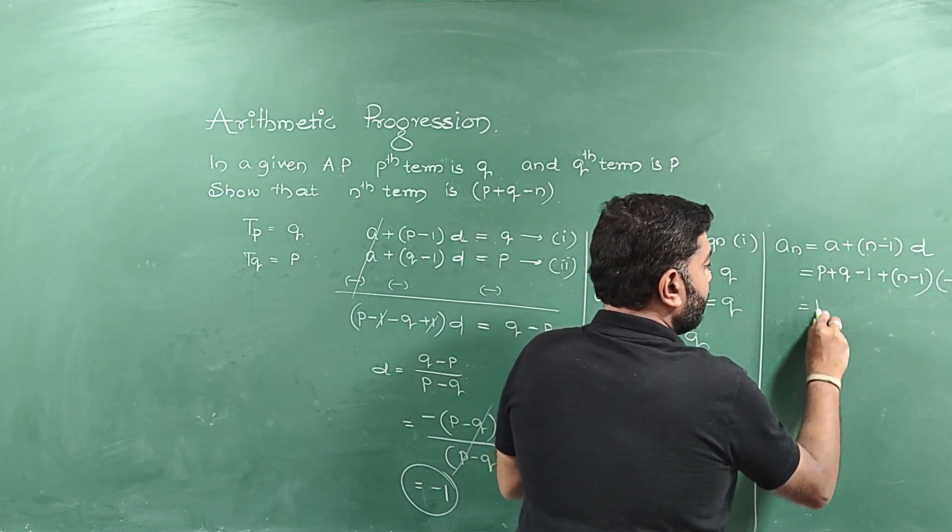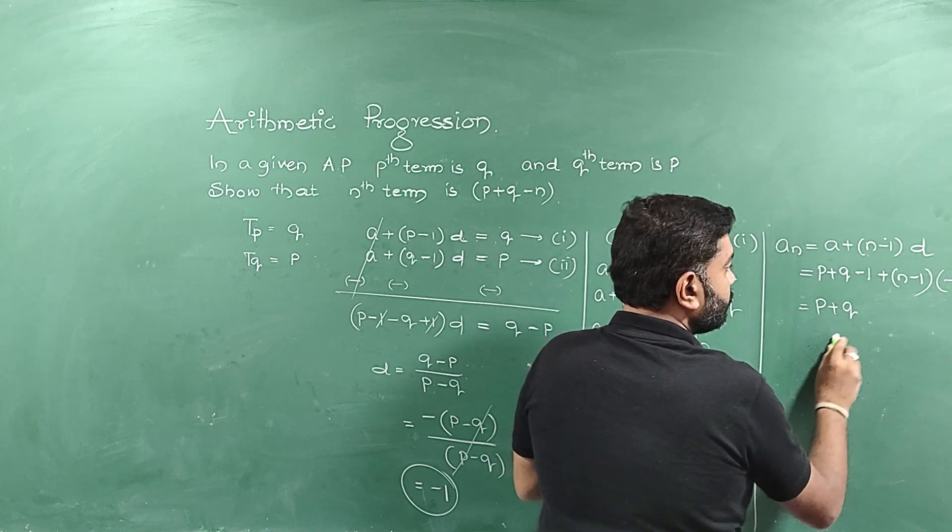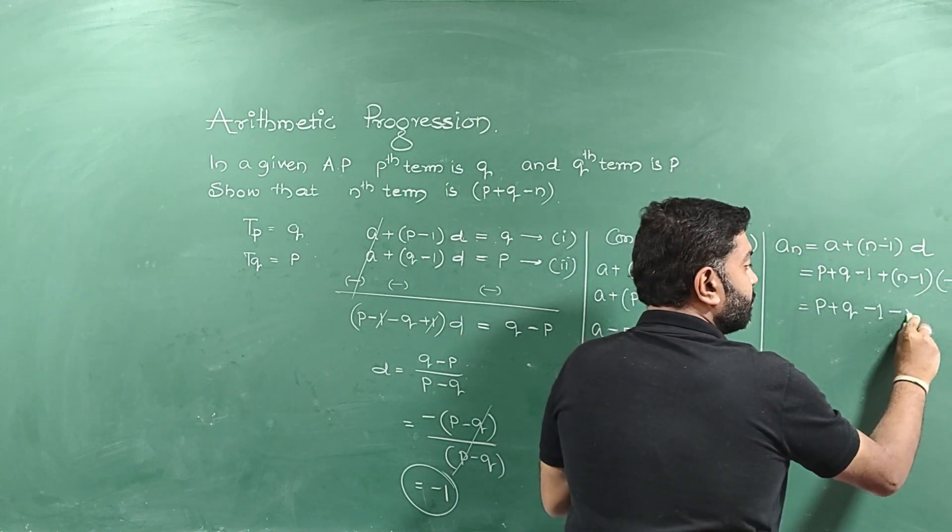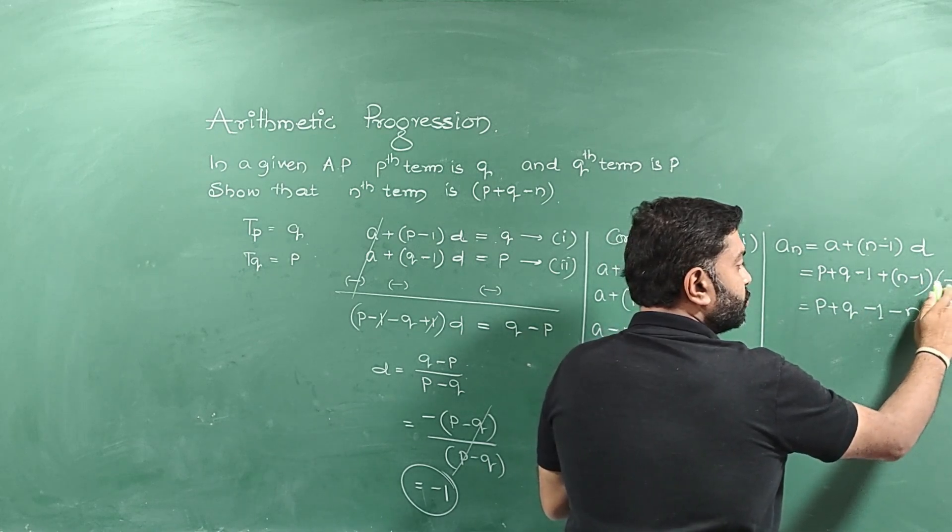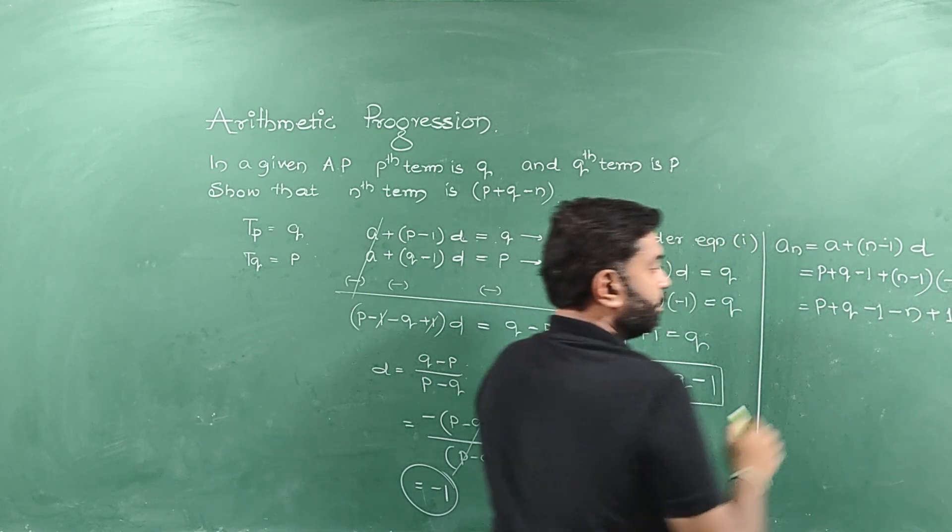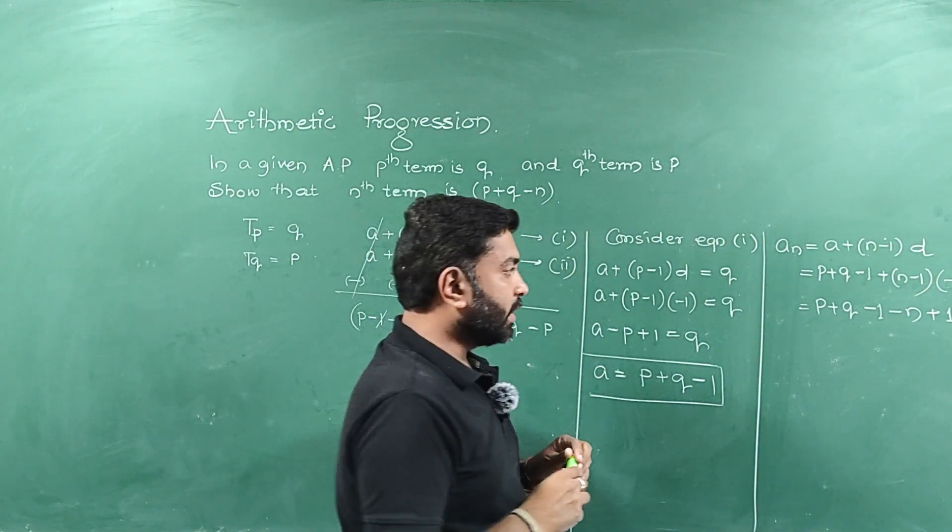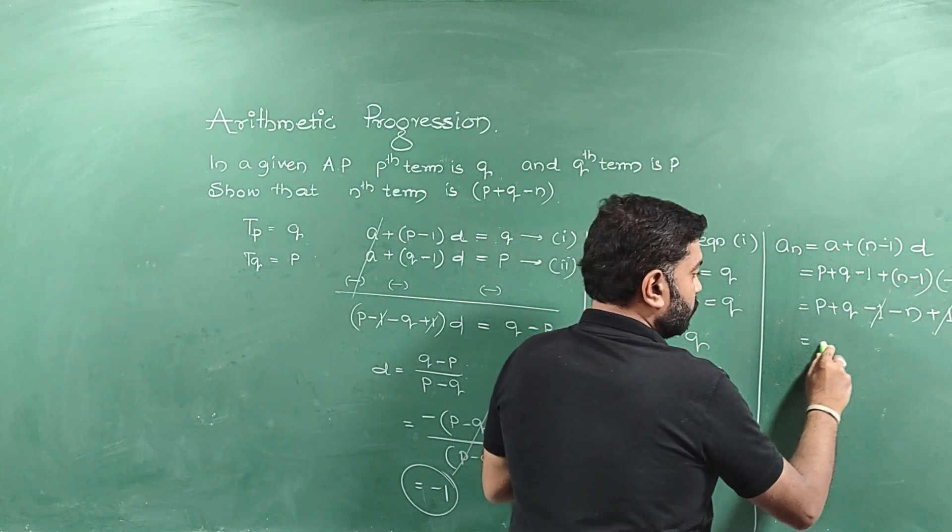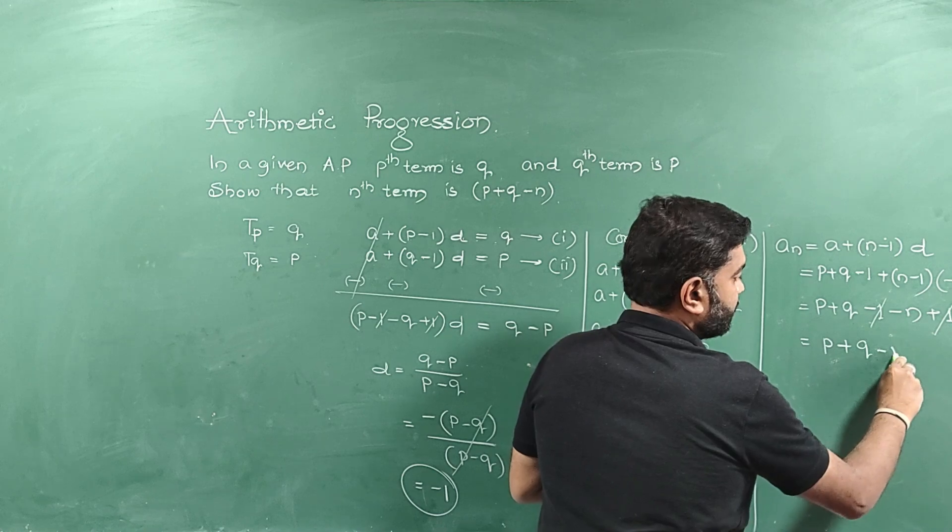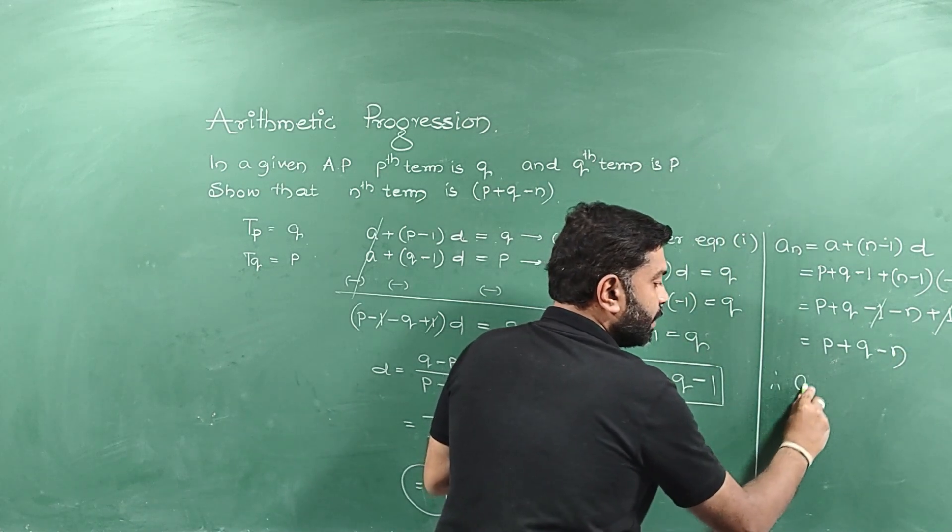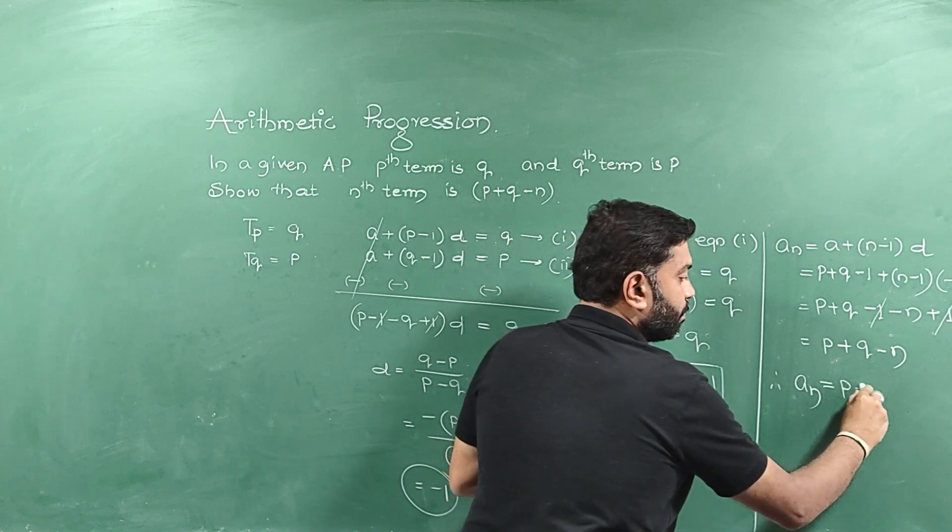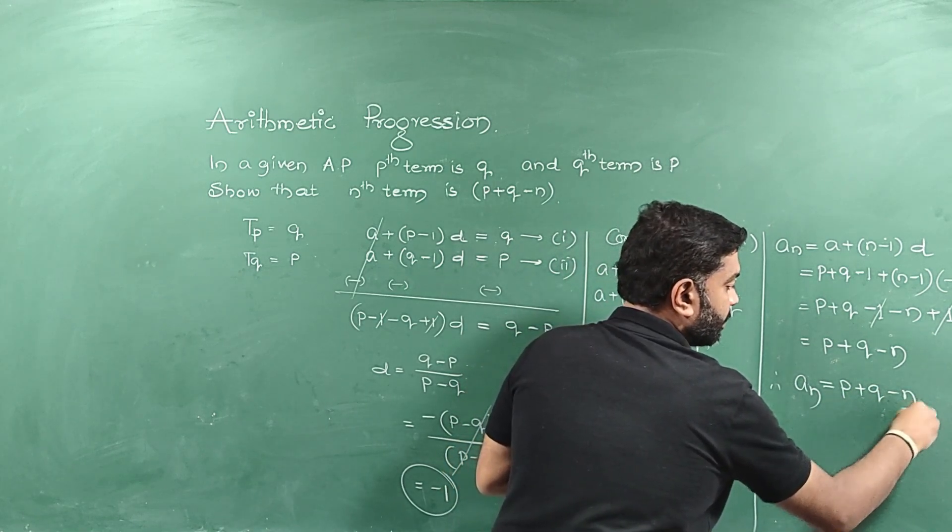So try to multiply. P plus Q minus 1 as it is. N into minus 1 is minus N. Minus 1 into minus 1 is plus 1. So which terms can we cancel? Plus 1 and minus 1 get cancelled. So what is remaining? P plus Q minus N. Therefore, we can say nth term of an AP, An is equal to P plus Q minus N.